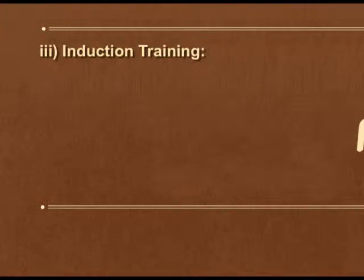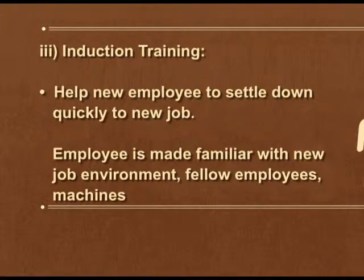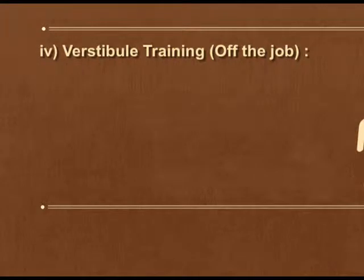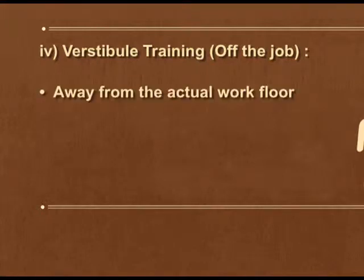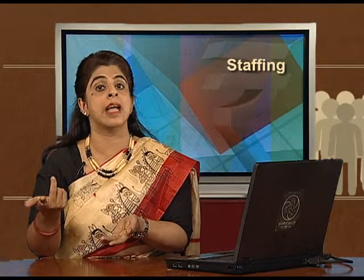The third type is induction training, which helps an employee settle down quickly to a new job. The employee is made familiar with the new job environment, fellow employees, machines, and other aspects of the organization. The duration may range from a few hours to a few days. The fourth type is vestibule training, which is off the job training. Training is given away from the actual workflow, but the actual work environment is created in a classroom, and employees use the same materials, files, and equipment they will use at their actual workplace. This type of training is suitable for organizations using sophisticated or complex machinery.